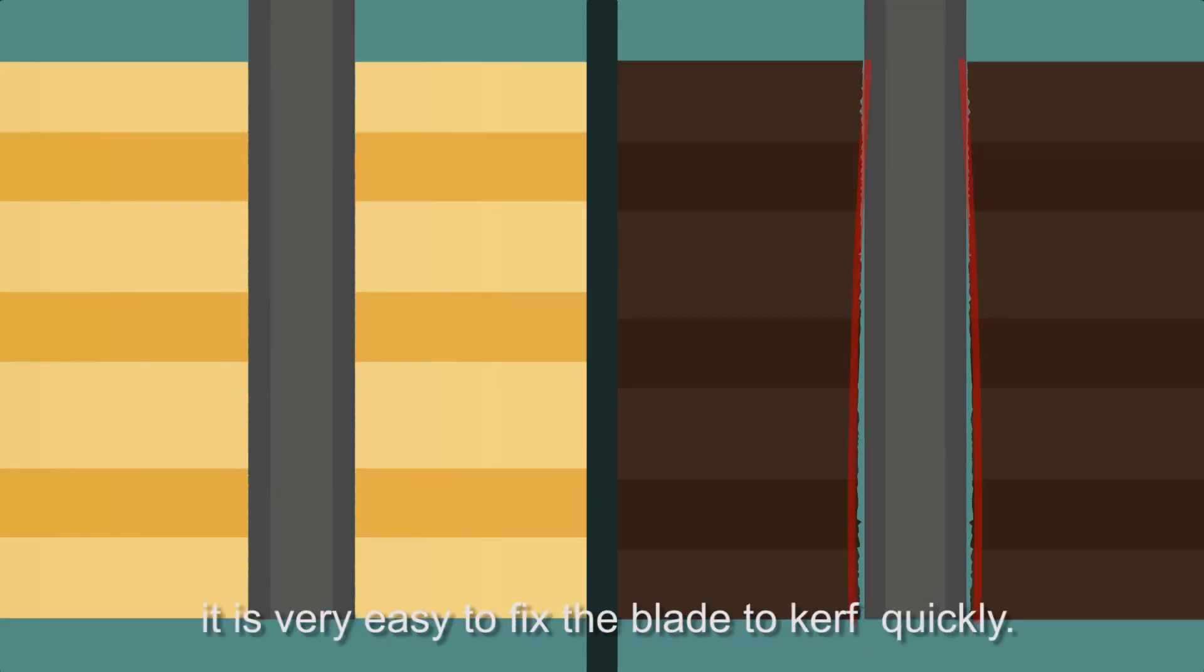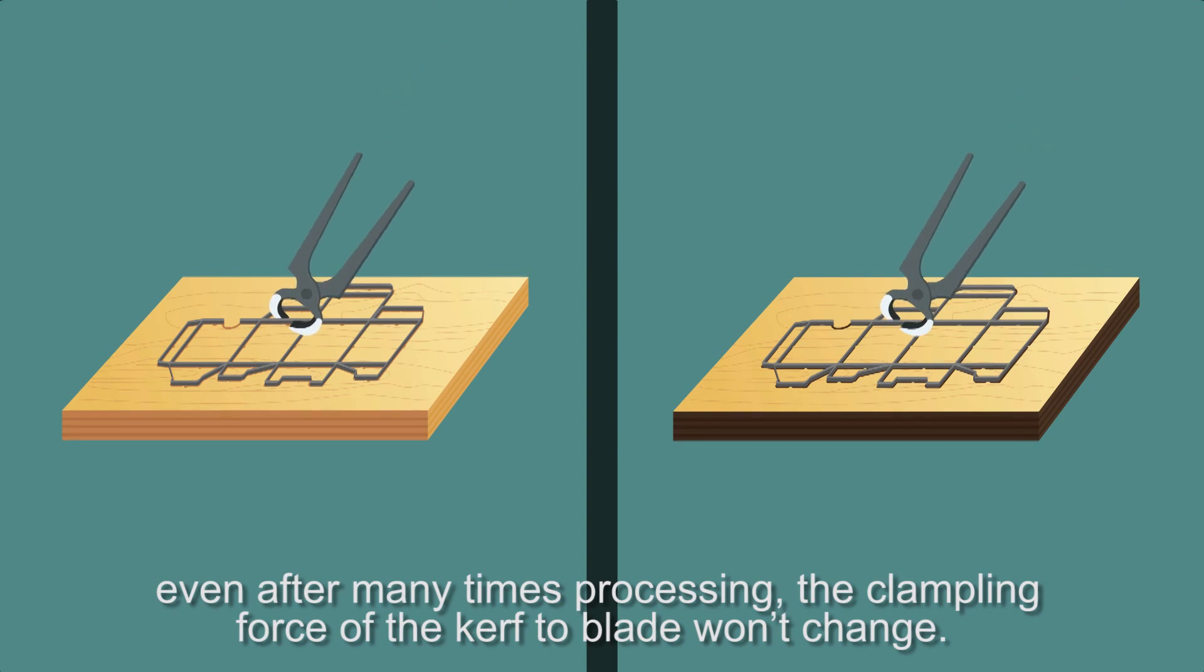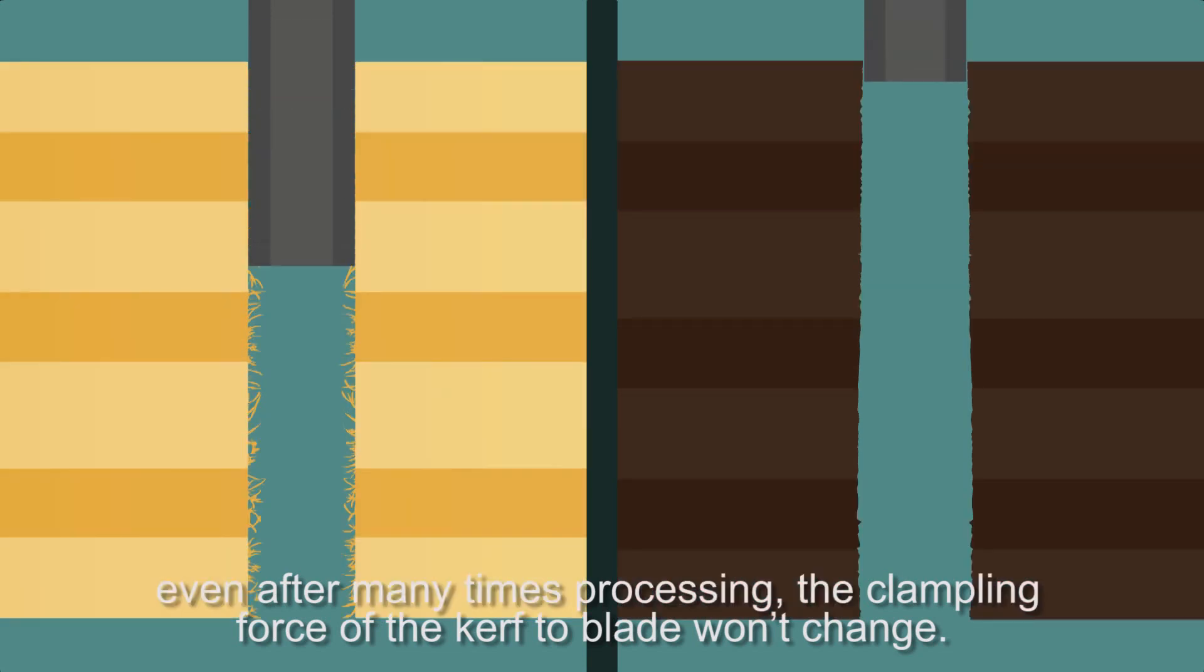Yizong Sawing Board Machine only leaves wood fiber on the side of the curve wall. Even after many times processing, the clamping force of the curve to blade won't change.